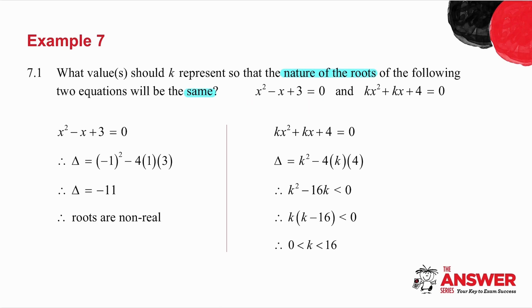If I'm asked about nature of the roots, I need to work out delta. And remember, delta is b squared minus 4ac. So I substitute b squared minus 4 times a times c, and I get delta to be minus 11.